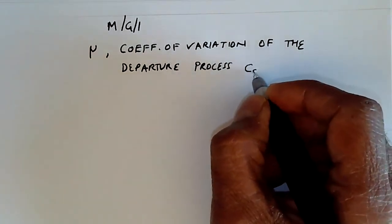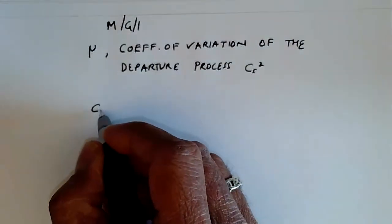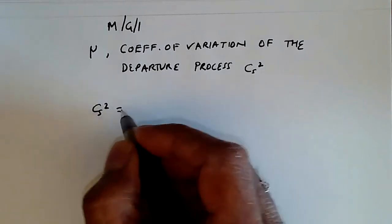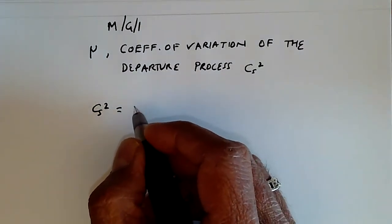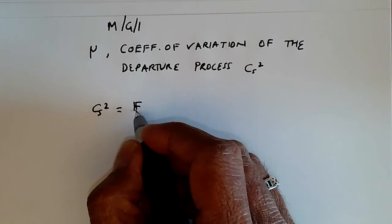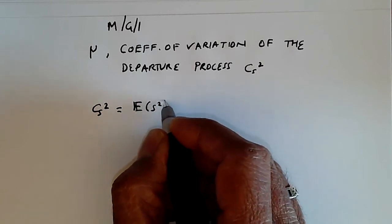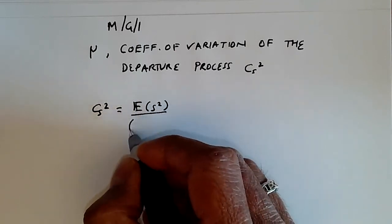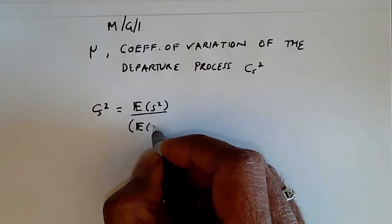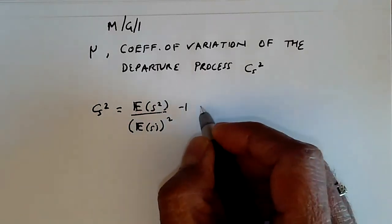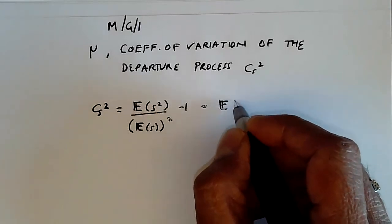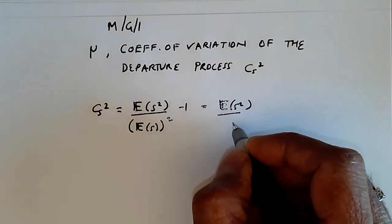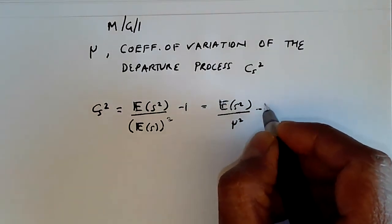C_S squared is given by the standard formula, which is the expected value of the square of the service time distribution over the expected value of S squared, minus one, which equals E[S²] / μ² - 1.